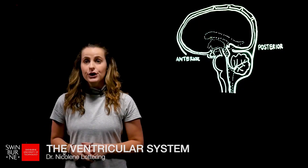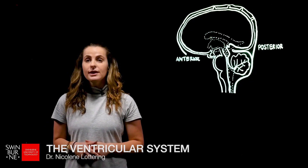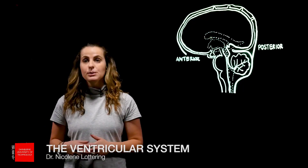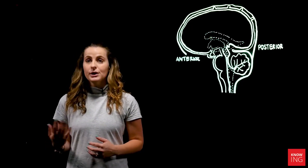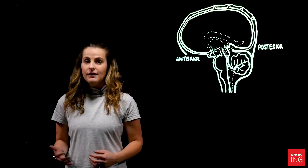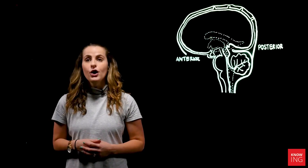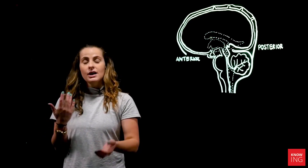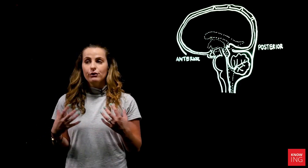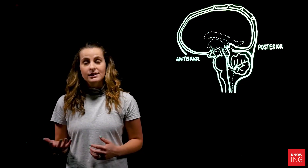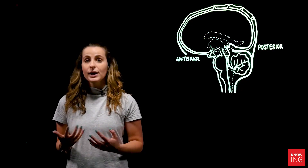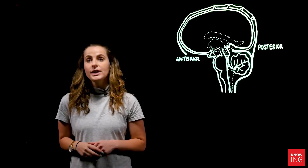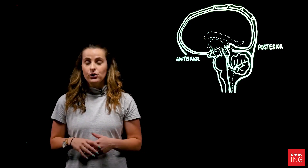The aim of this lightboard video is to provide an overview of the ventricular system of the brain, where cerebral spinal fluid is produced and disseminated — from the lateral ventricles flowing through and around the subarachnoid space, then entering back into the venous blood system via the superior sagittal sinus. Specifically, we have three main ventricles located within the cranial cavity.